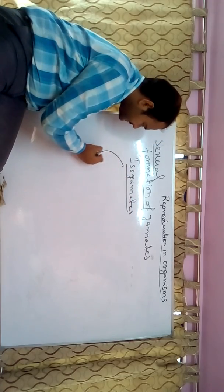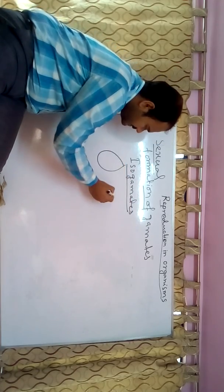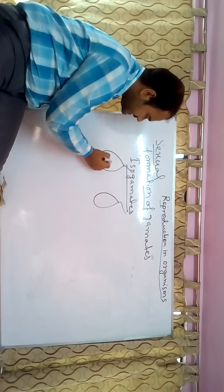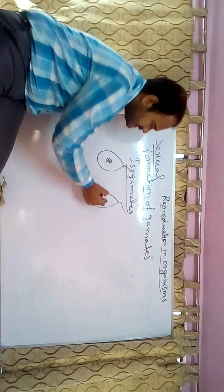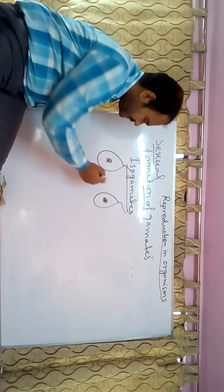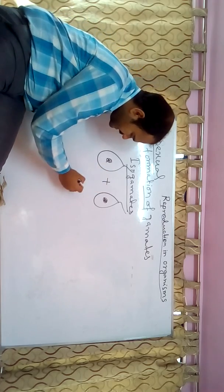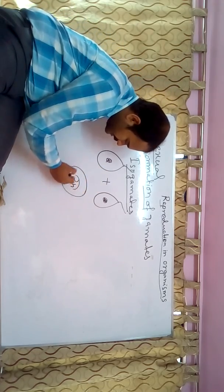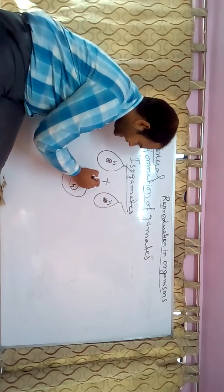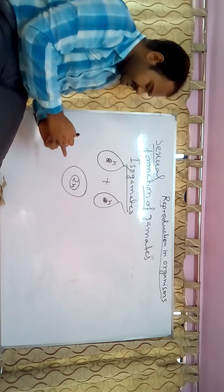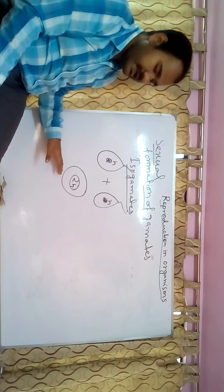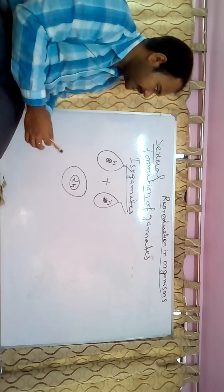The formation of gametes includes different types. There are isogametes — in isogametes you cannot distinguish which is male and which is female; both gametes are the same. They are similar in structure and when they fuse they form a 2n zygote. Each gamete contributes n, so together they form 2n.